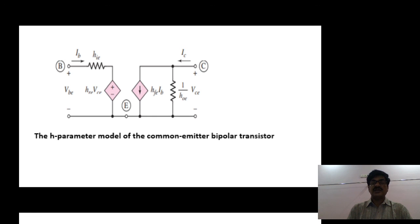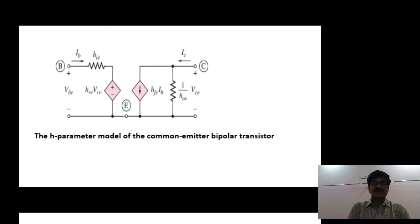These are the equivalent circuits for the BJT transistor. The different equivalent circuits we have seen are: the hybrid pi equivalent circuit without Early effect, the hybrid pi equivalent circuit including the Early effect, and the H-parameter equivalent circuit. From the next class onwards, we will see the analysis of BJT amplifiers using these equivalent models. Thank you.